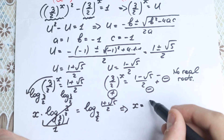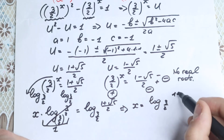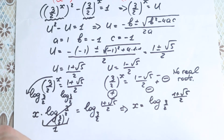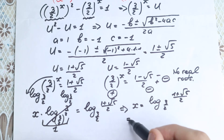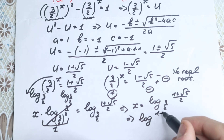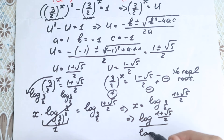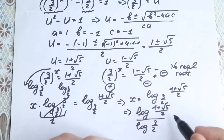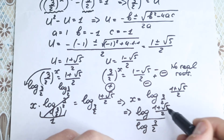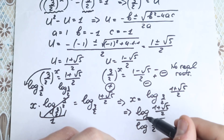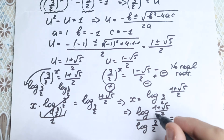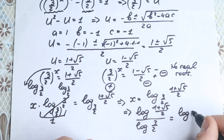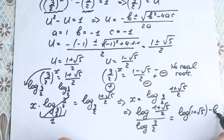So x equals log base 3 over 2 of 1 plus square root of 5 over 2. Using the change of base formula, this equals log of 1 plus square root of 5 over 2, divided by log of 3 over 2 — using base 10. We can further expand: log of 1 plus square root of 5 minus log 2, all over log 3 minus log 2.